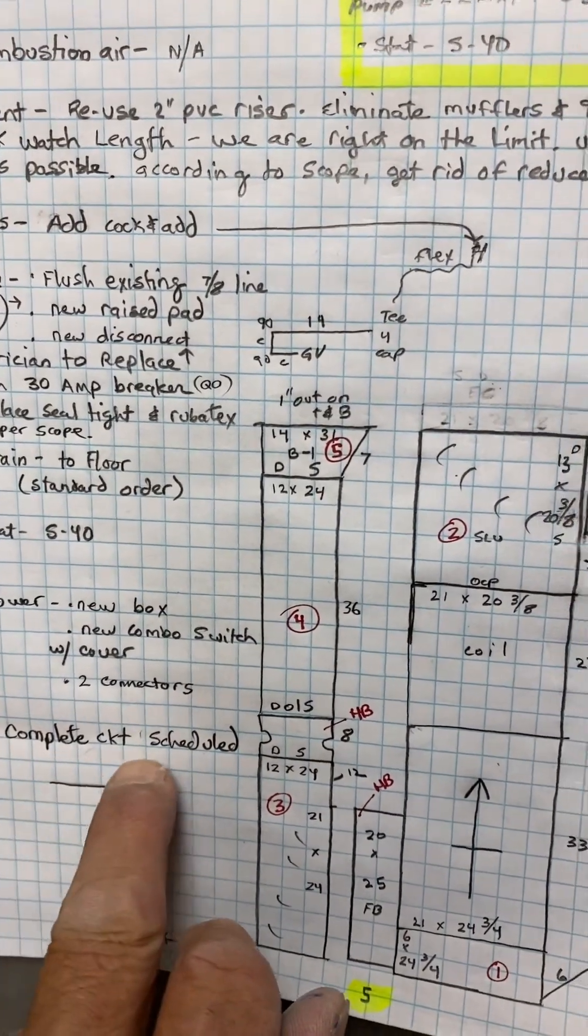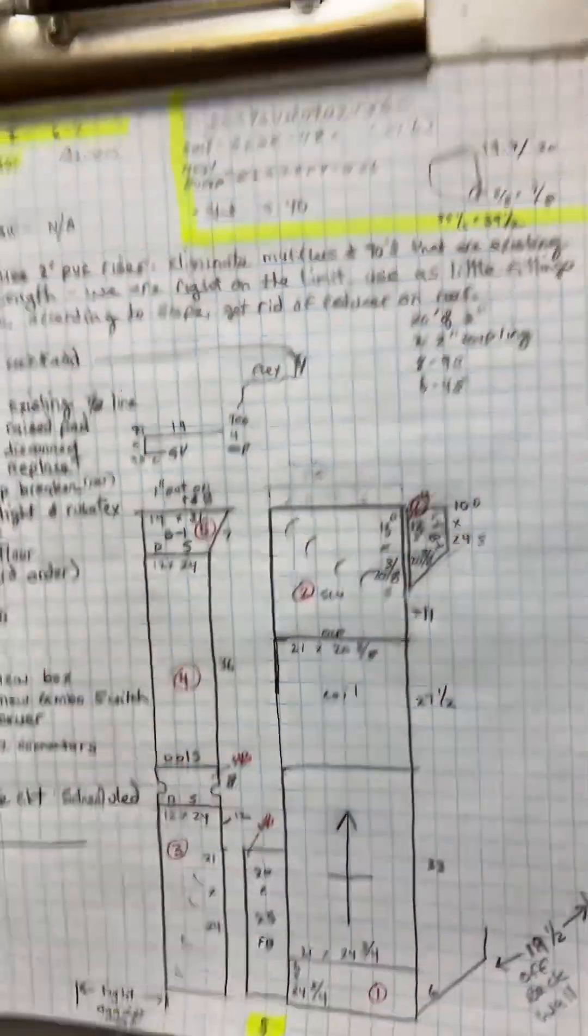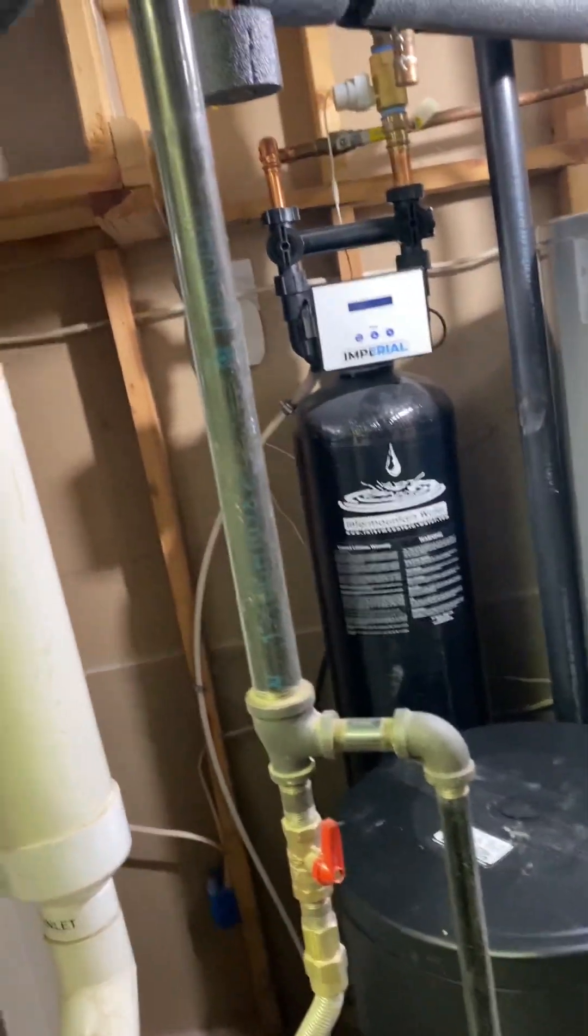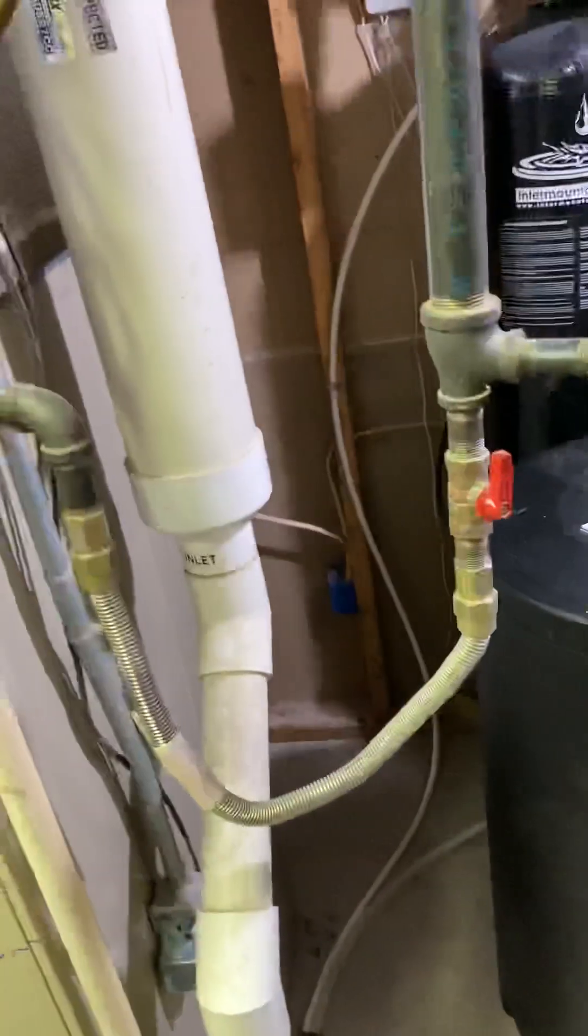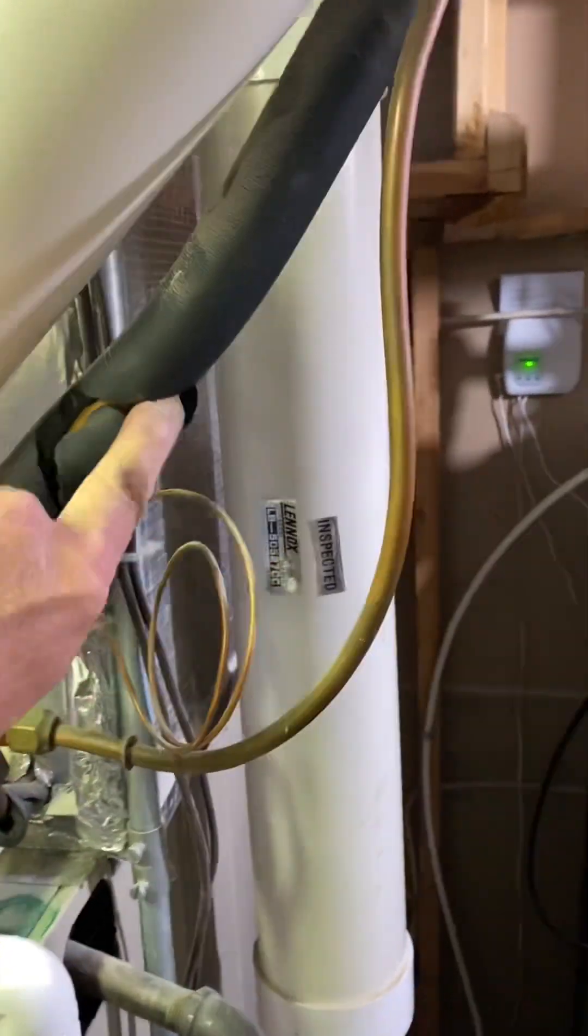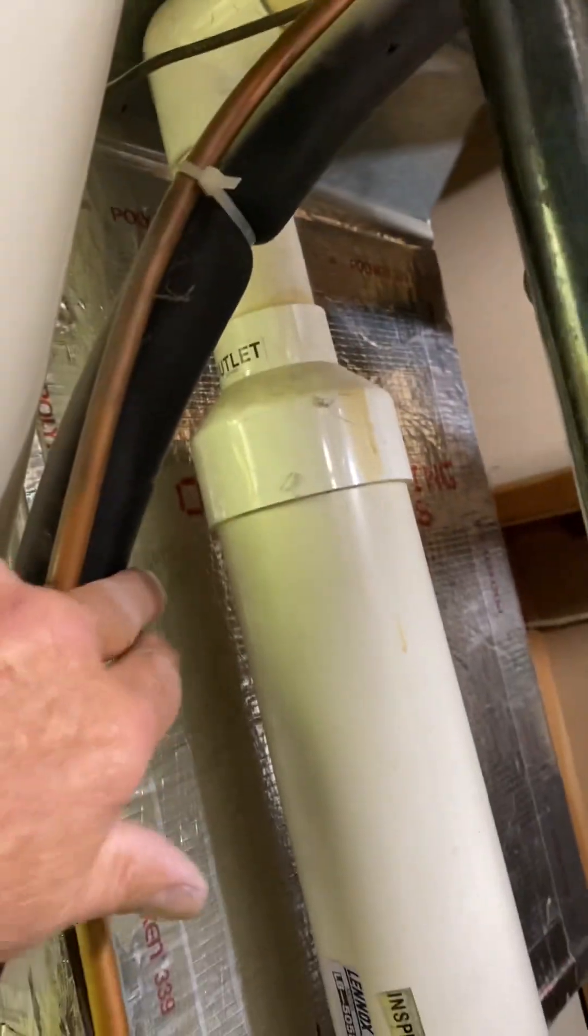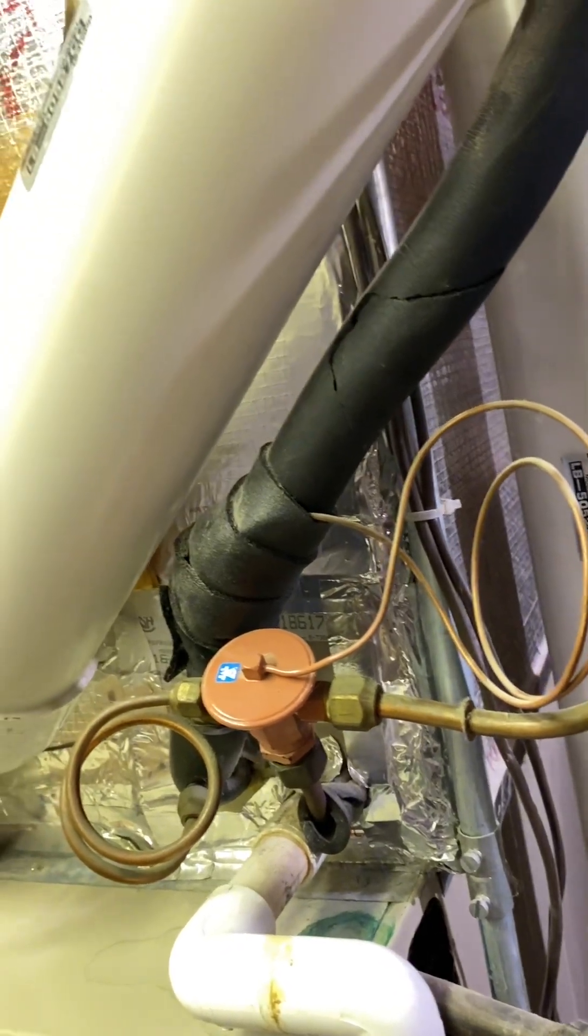So we'll have to come schedule complete circuit out to change the disconnect outside. Let's take a walk outside. You will flush the 7-8 line set. You're going to replace as much Rubitex as needed out in here with new. You're going to replace all the Rubitex outside.